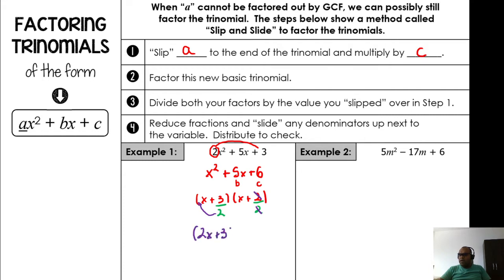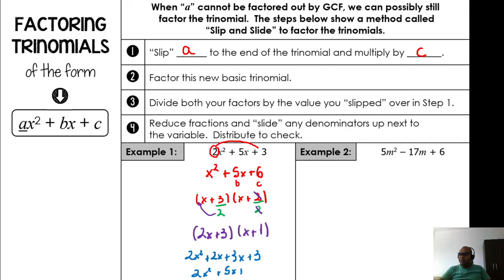That gives us (2x + 3)(x + 1). Let's check by distributing: 2x · x = 2x², 2x · 1 = 2x, 3 · x = 3x, 3 · 1 = 3. Combining like terms: 2x² + 5x + 3. Did we return to the original? Yes! So cool — so easy, guys!